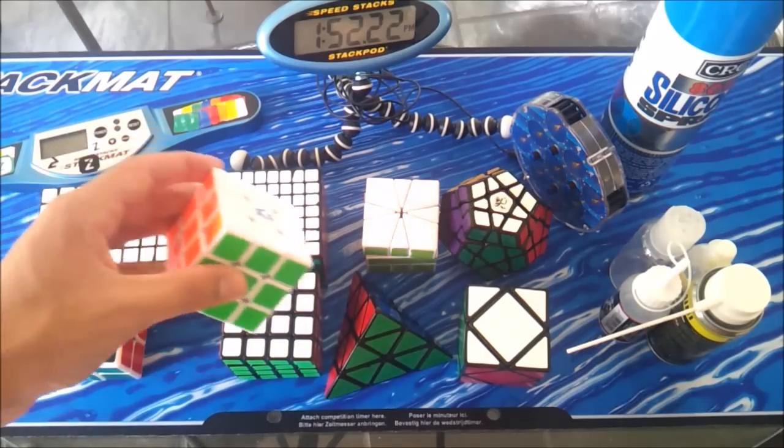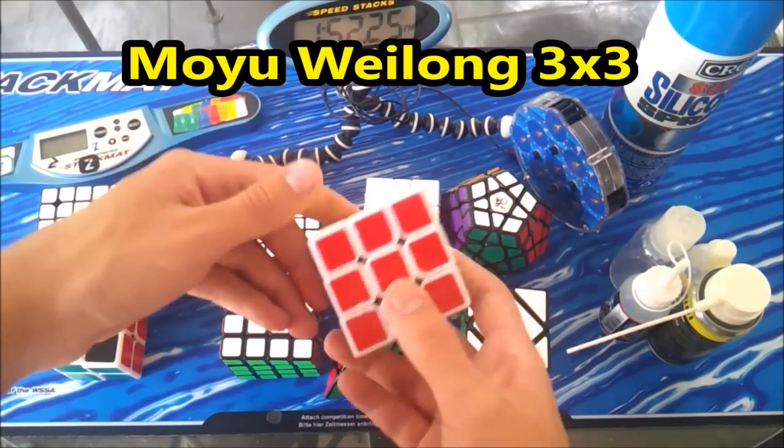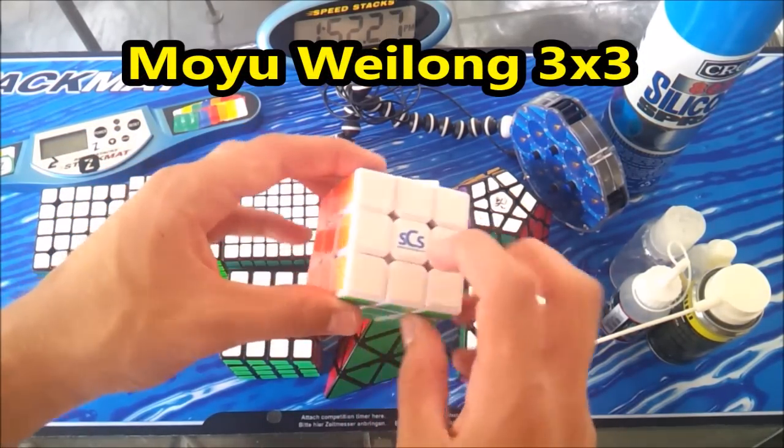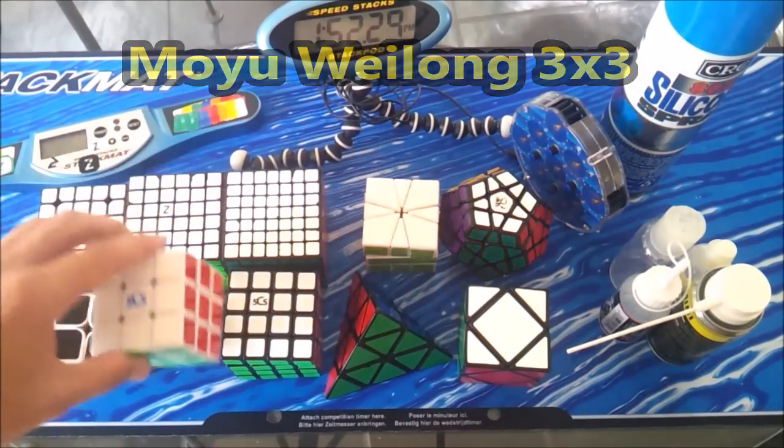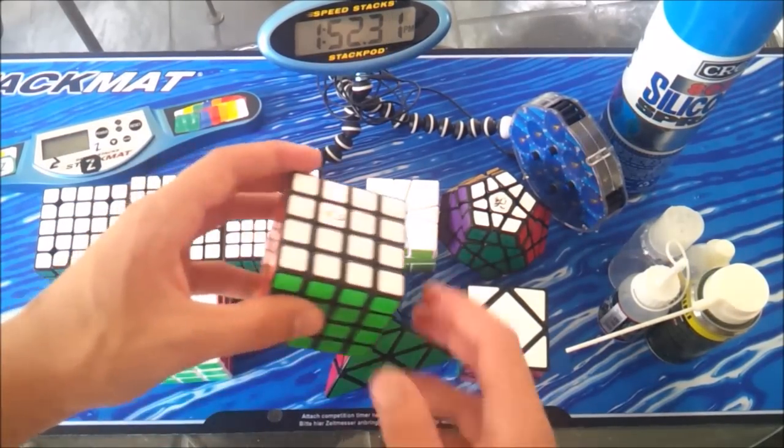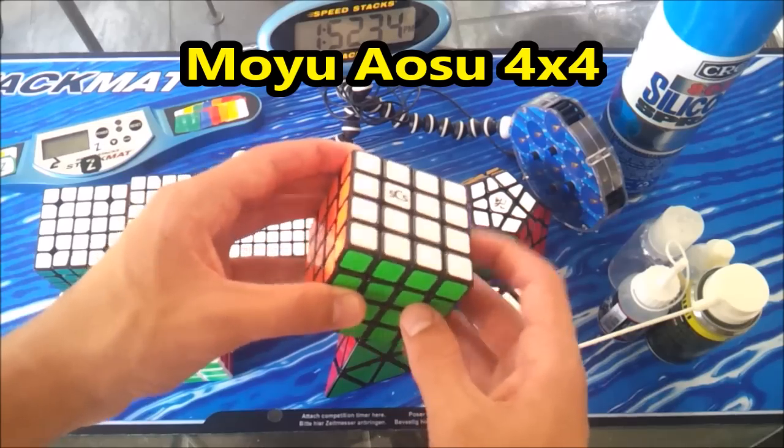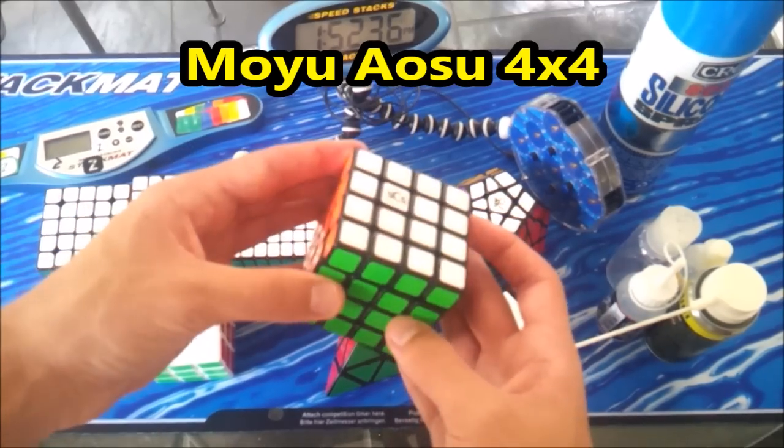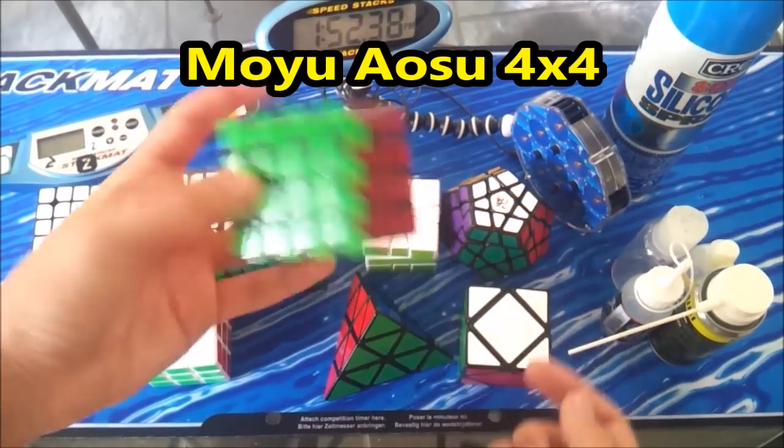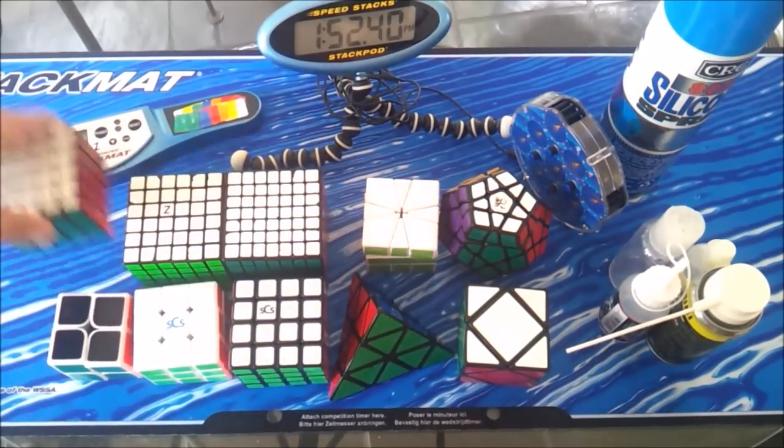For three by three, I use a Moyu Weilong. It's got the standard Moyu stickers with a speedcube shop logo. For four by four, I use a Moyu Aosu, standard stickers again, standard Moyu stickers and a speedcube shop logo.